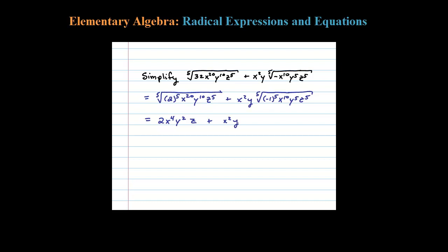Let's look at this second radical to simplify. The fifth root of negative 1 to the fifth is negative 1. 5 goes into that exponent 10 perfectly, twice. The fifth root of Y to the fifth is Y, and the fifth root of Z to the fifth is Z.